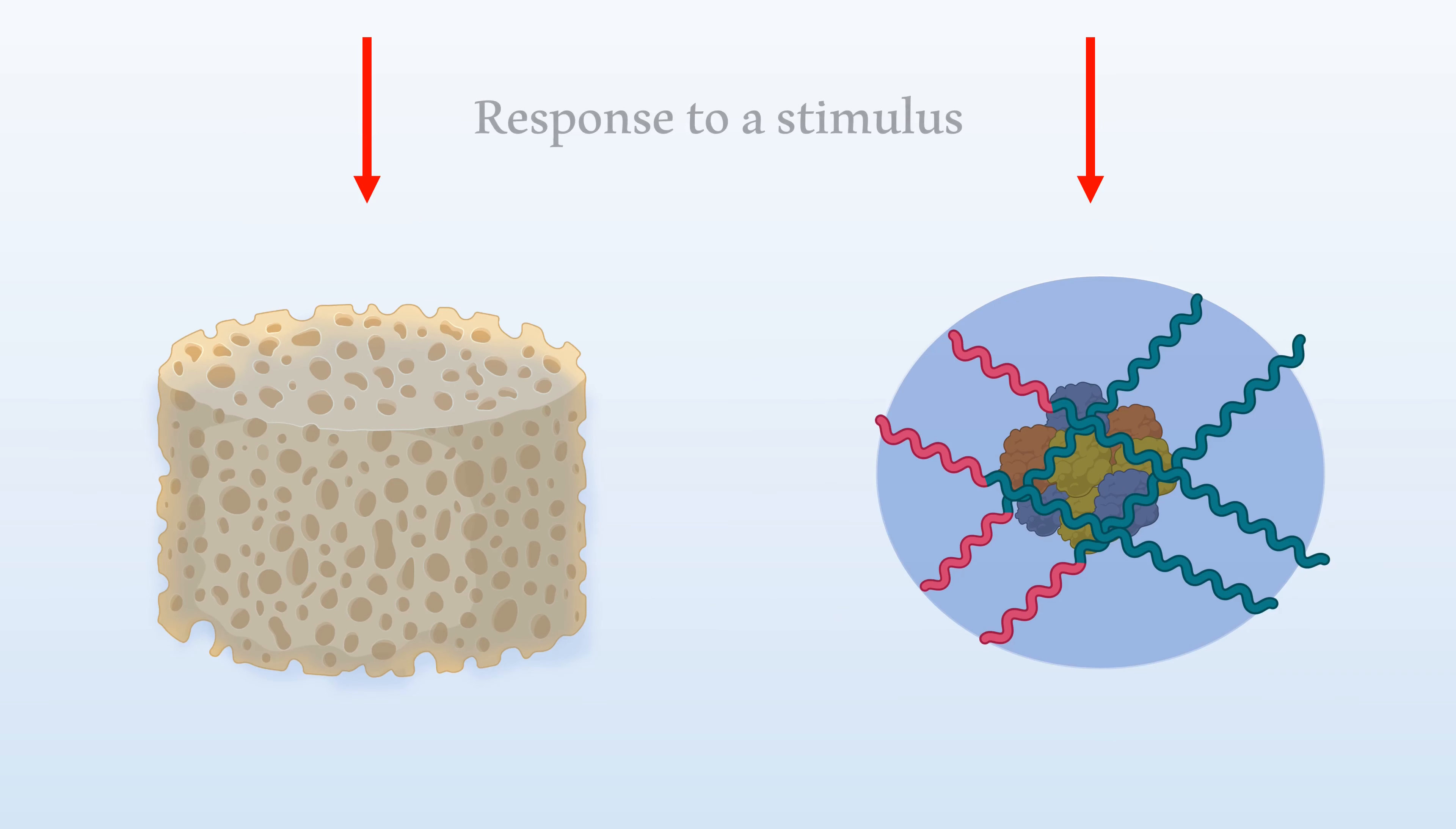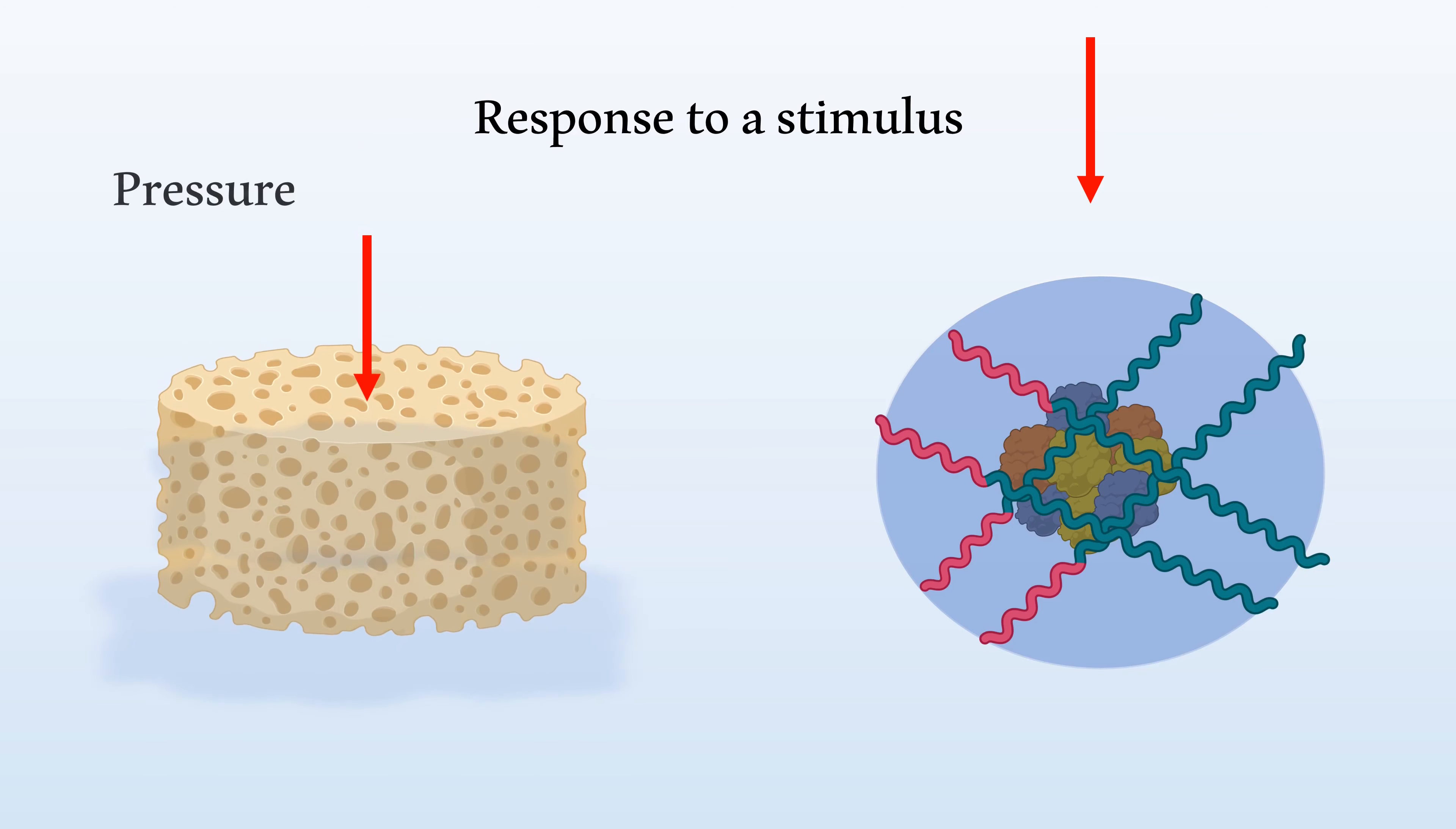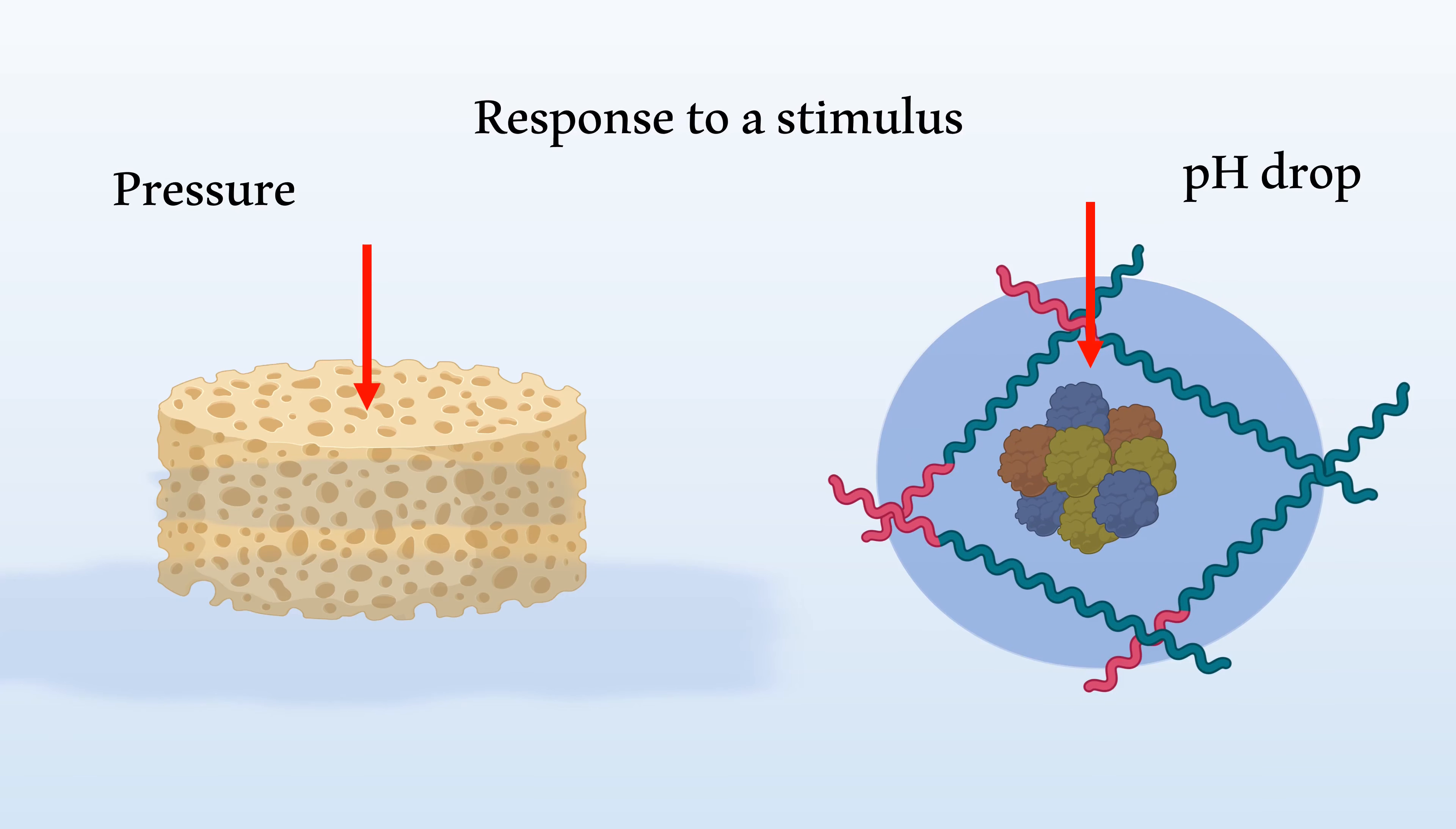One of the main ways scientists can modify a gel is by making it responsive to a certain stimuli. Think back to the sponge. It doesn't release the water inside until you squeeze it. In this case, the stimuli is pressure. For nanogels, that stimulus is often pH or the temperature of the environment.